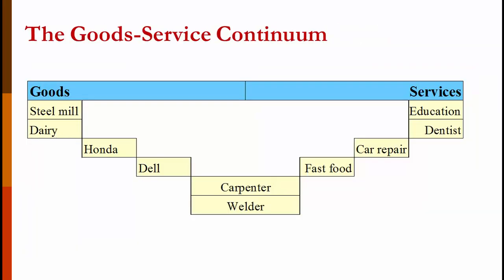We tend to think of goods and services as two separate categories, but they're not — they exist on a continuum. A steel mill and a dairy are all goods with little to no service involved. If you buy a Honda or Ford, it's mostly manufacturing but they also service your car. If you buy a Dell computer, they manufacture it but also provide technical support. Carpenters and welders make things but really provide a service. Fast food is mostly service but they hand you a hamburger. Car repair is mostly service with a little manufacturing, and education and the dentist are pure services.